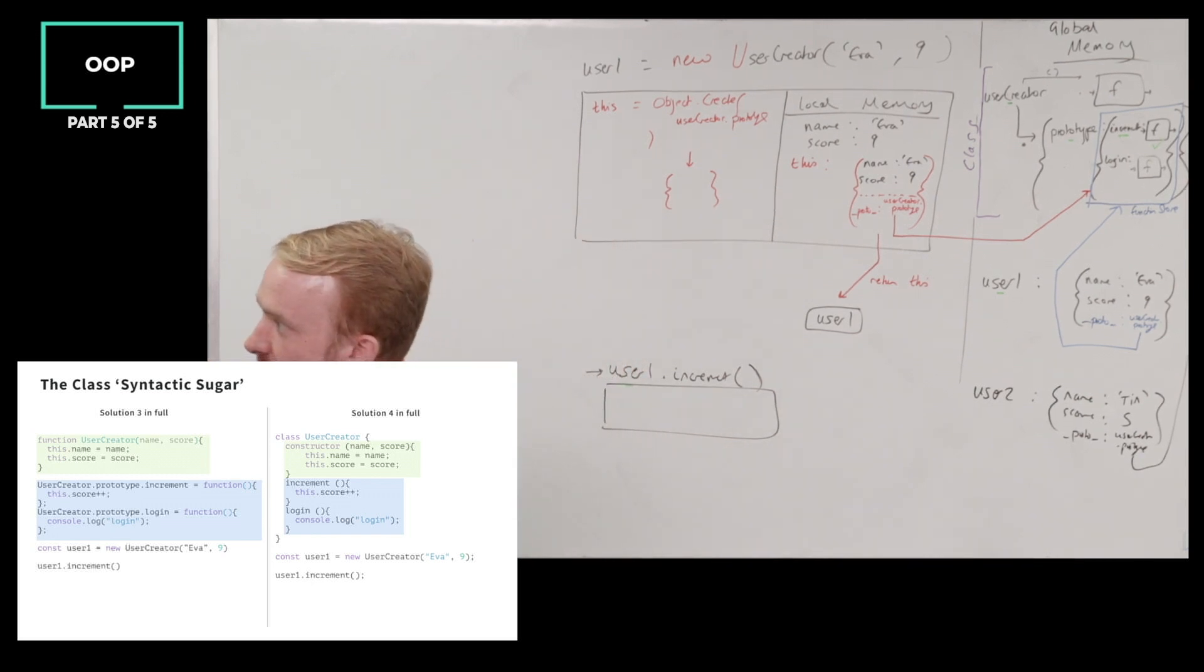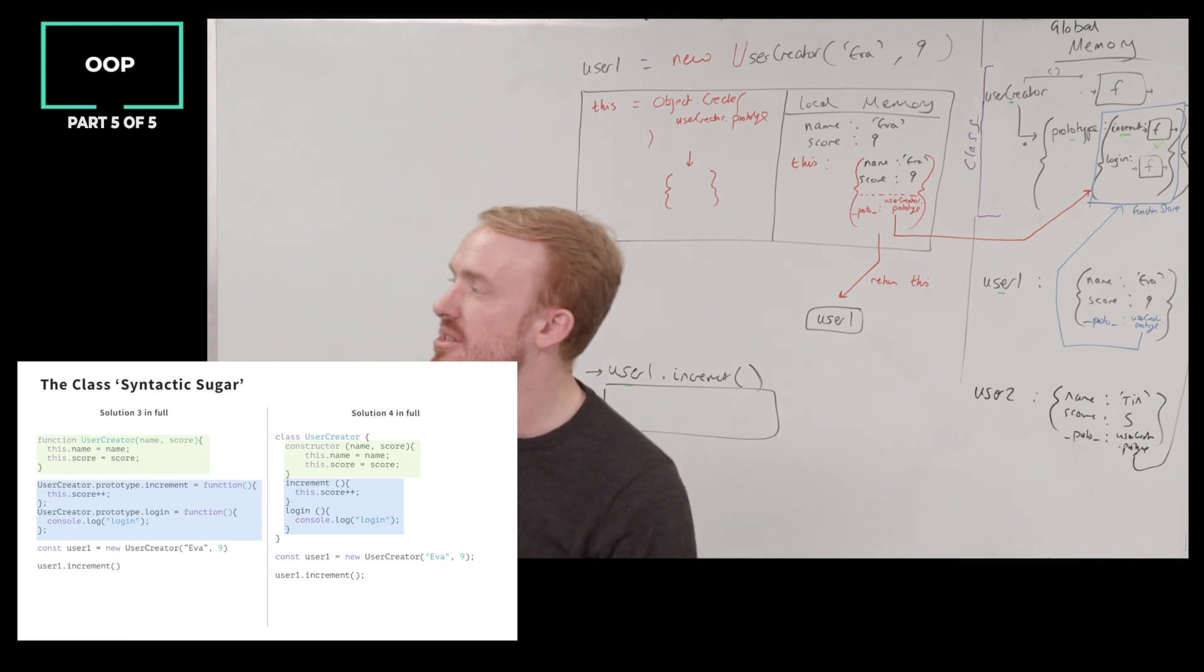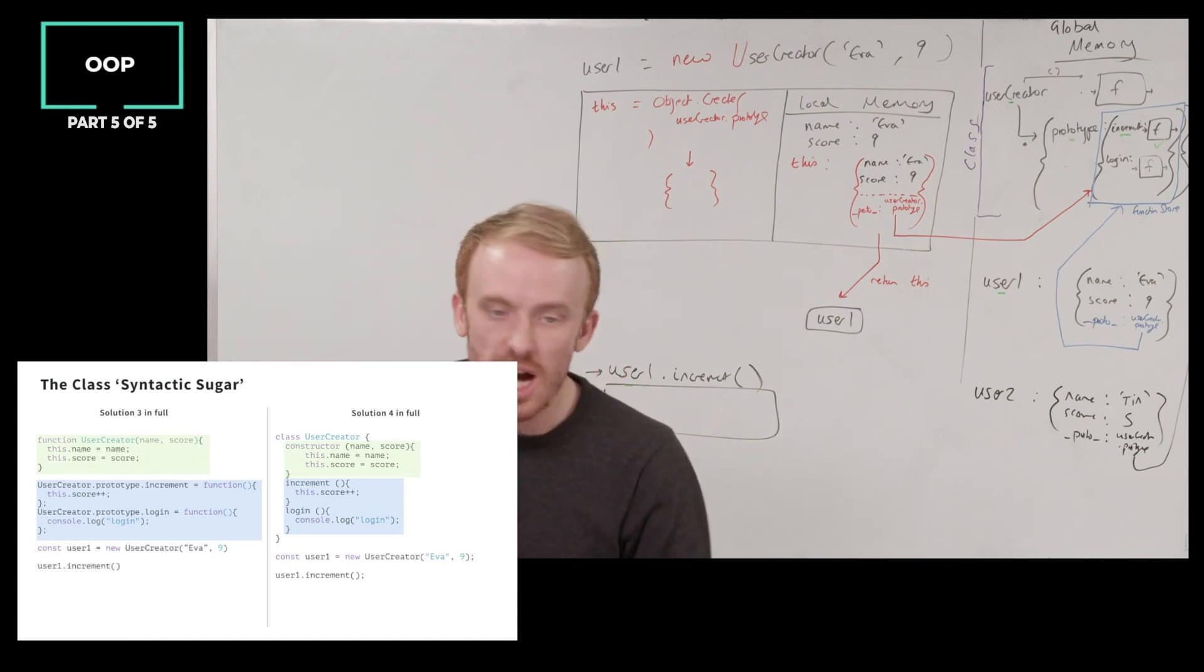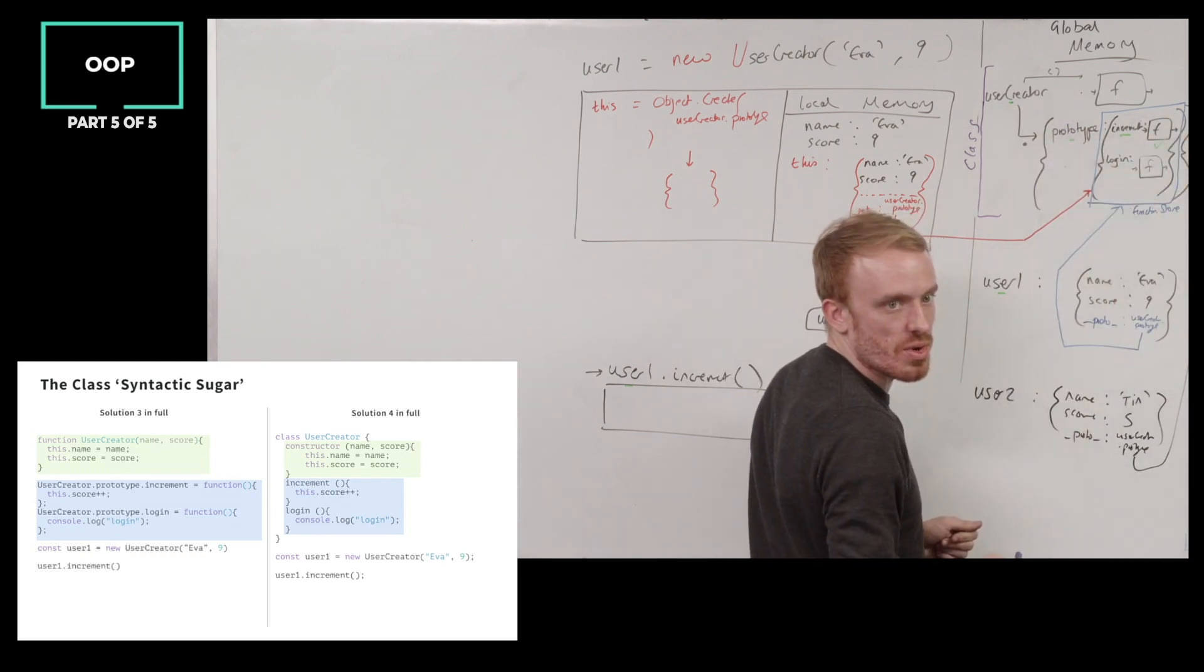Well, that's exactly the same as what I had in version three. Call it user creator, and then we ran user creator, we're running a function version of it. But we added to the object version of it, these shared functions, a shared function store. Well, here, we don't even have to manually do that, but know they're going in exactly the same place.